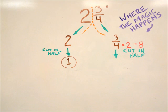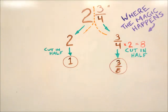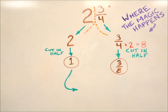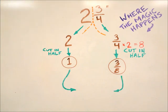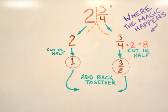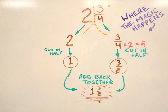So in this case, half of 3 quarters of an inch is 3 eighths of an inch. So I found half of my whole number and I found half of my fraction. Now I can add them back together and I've found the measurement I was looking for. So 2 and 3 quarters of an inch at half scale is 1 and 3 eighths of an inch.